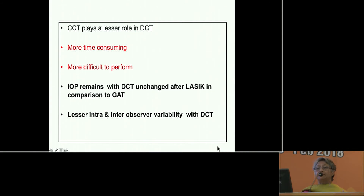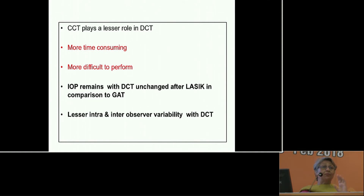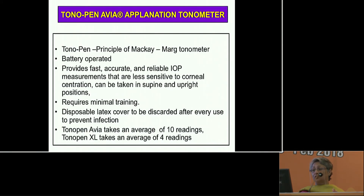Central corneal thickness plays a much lesser role in DCT, but it is said to be more time-consuming and more difficult to perform. Importantly, IOP remains unchanged with the DCT after LASIK, which is of great importance as we get patients who have undergone LASIK. There is also less intra- and inter-observer variability.